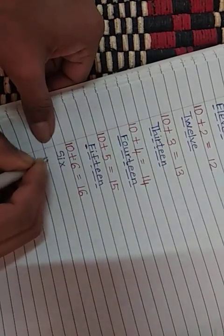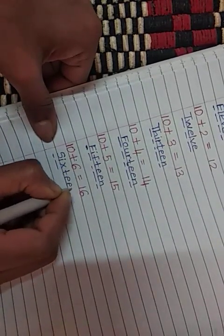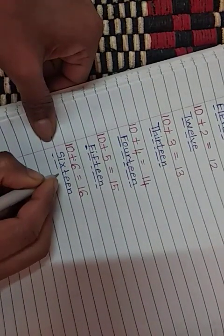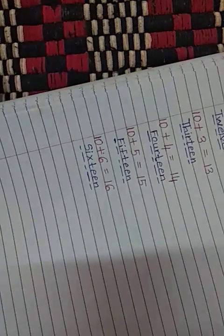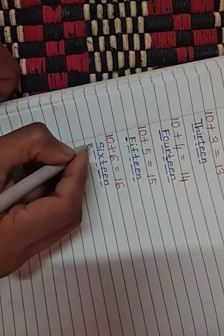S-I-X, T-E long sound, E-N. Sixteen. S-I-X-T-E-E-N, 16.